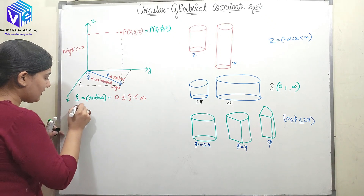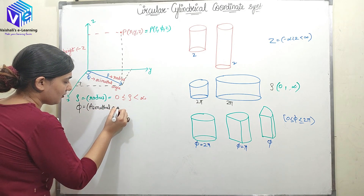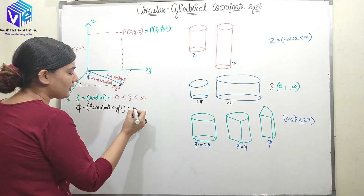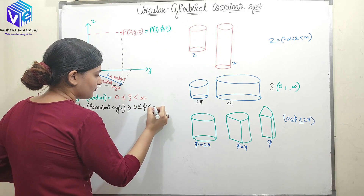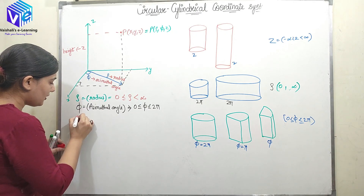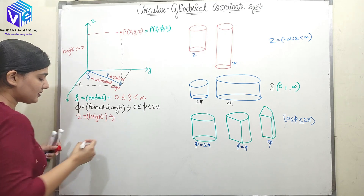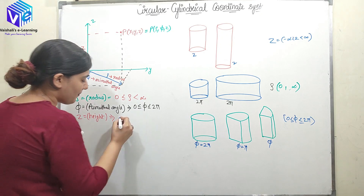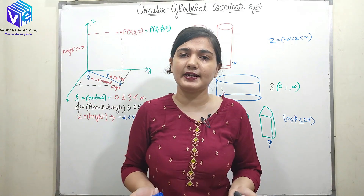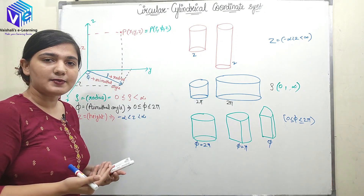The next parameter is phi, the azimuthal angle. Its range is 0 to 2π. And z denotes the height. The range of z is from minus infinity to infinity — height can be anything, including negative direction.